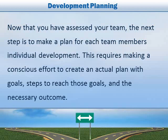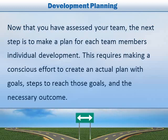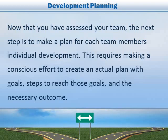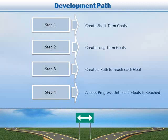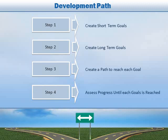Development planning: now that you have assessed your team, the next step is to make a plan for each team member's individual development. This requires making a conscious effort to create an actual plan with goals, steps to reach those goals, and the necessary outcome. Step 1: create short-term goals. Step 2: create long-term goals. Step 3: create a path to reach each goal. Step 4: assess progress until each goal is reached.